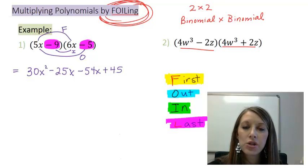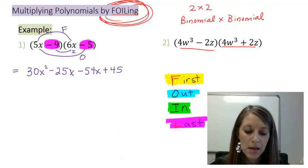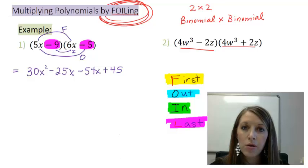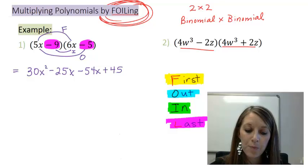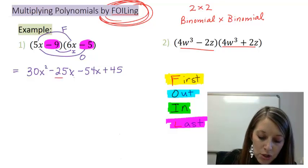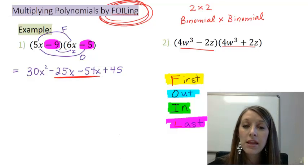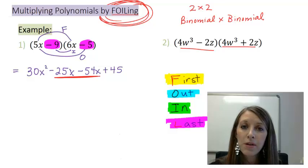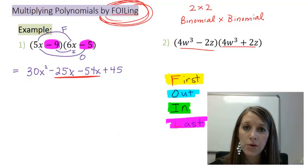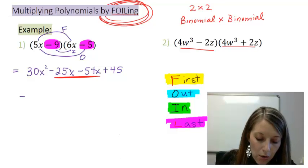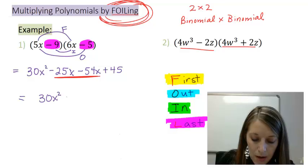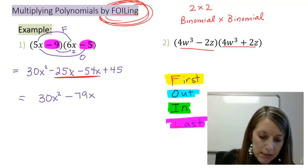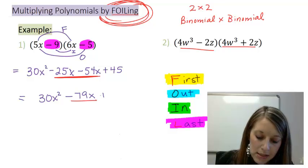So I have multiplied these two binomials in my FOIL order: First, outside, inside, last. Now the reason that we suggest this order is because of two reasons. If we look at the order of our polynomial, it has put it in descending order for us. So I don't have to worry about that from here on out. Also, if I look at my two middle terms, these are like terms. And they will be that way most of the time. So to simplify this and to get my final answer, all I need to do is combine those middle two terms.